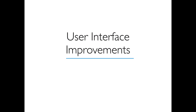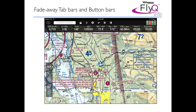Let's begin with the user interface improvements. The first thing most people will probably notice is that there's no tab bar at the bottom of the screen most of the time. The tab bar was used in FlyQ EFB 1.5 and all previous versions to jump between different parts of the app — the map, the airports, the procedures, flight plan, whatever. The reason why they're not there anymore is because most of the time you don't need them.